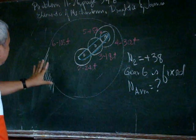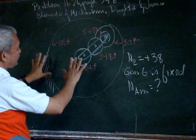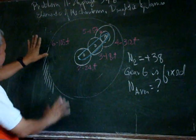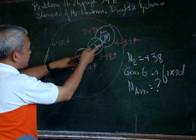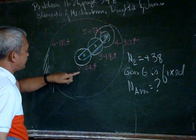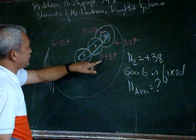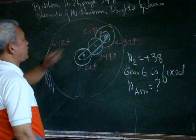In this problem we have a fixed gear 6 and there is an arm that carries gears 2, 3, 4, and 5.